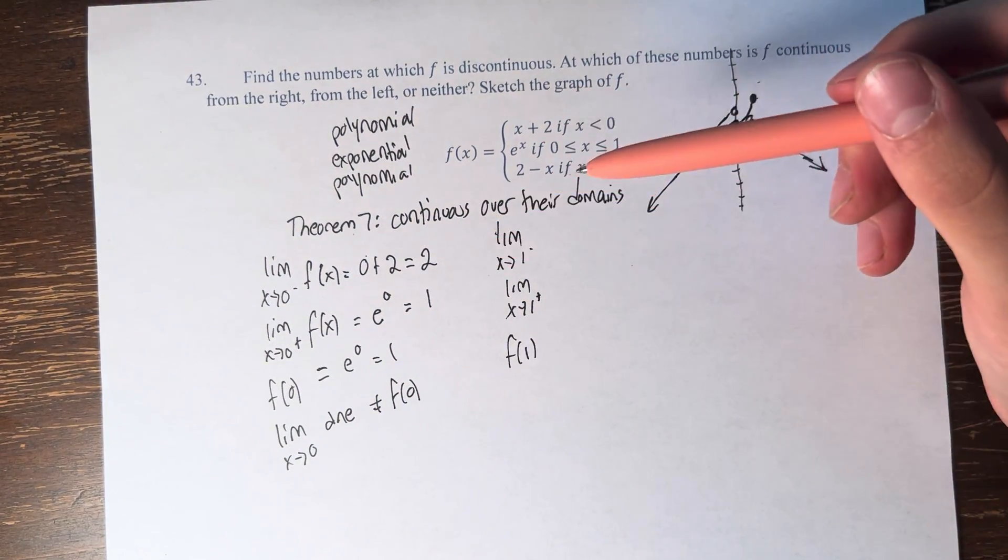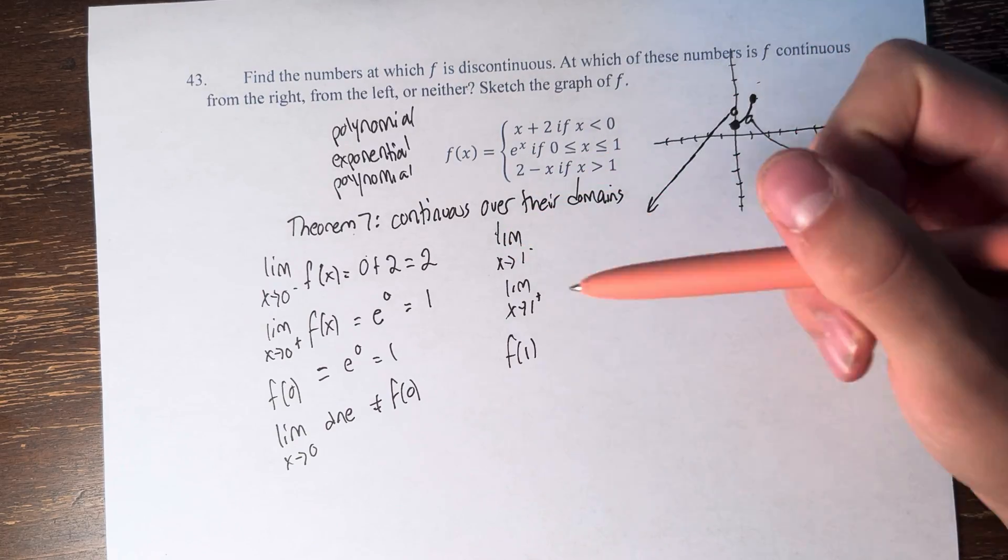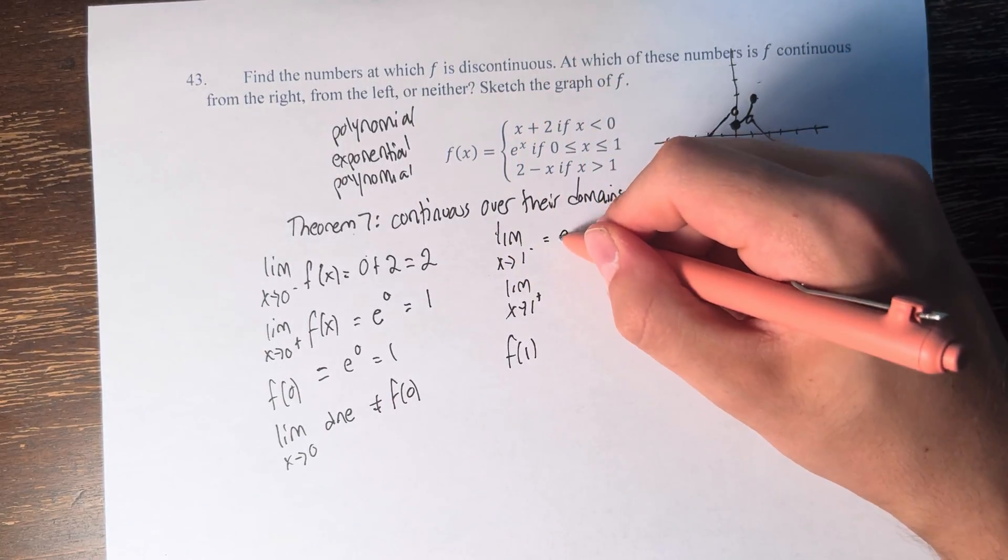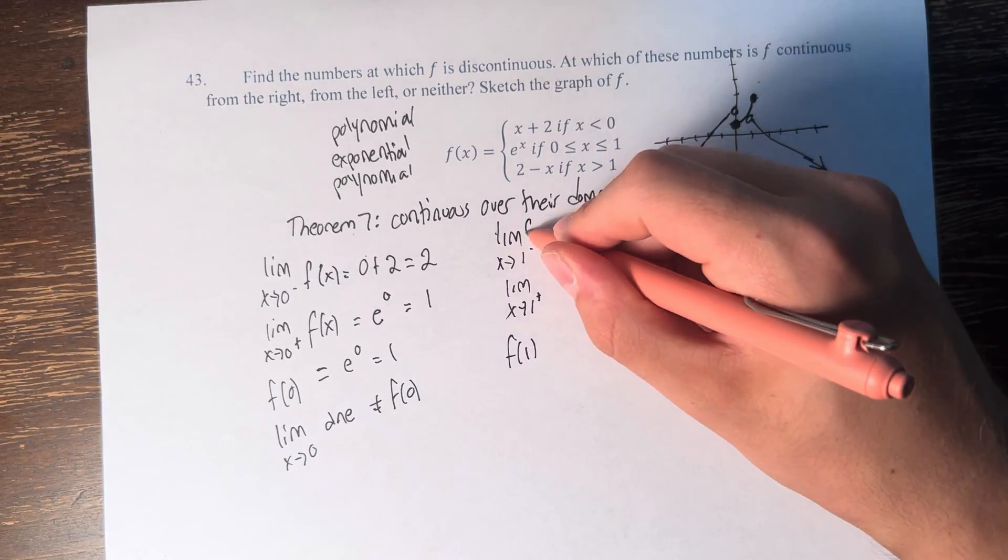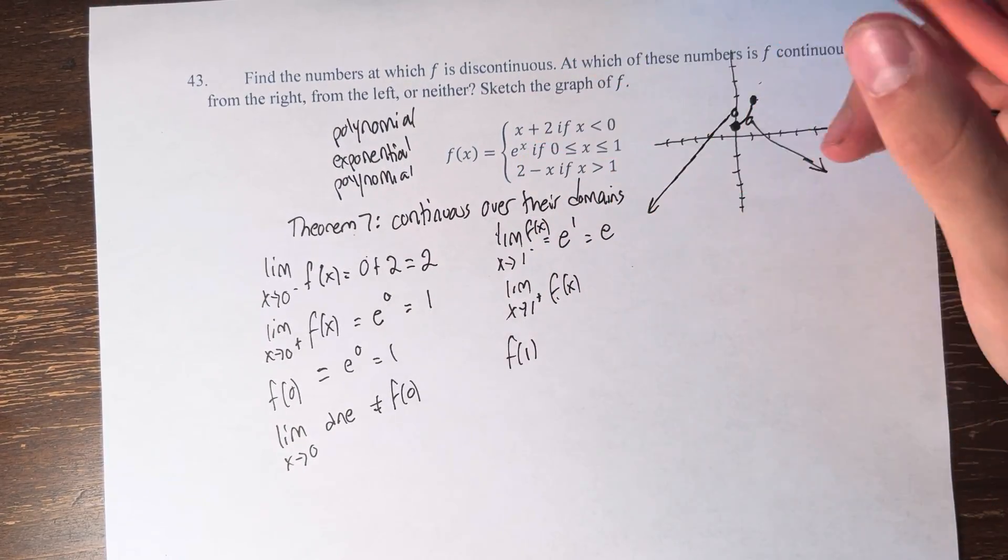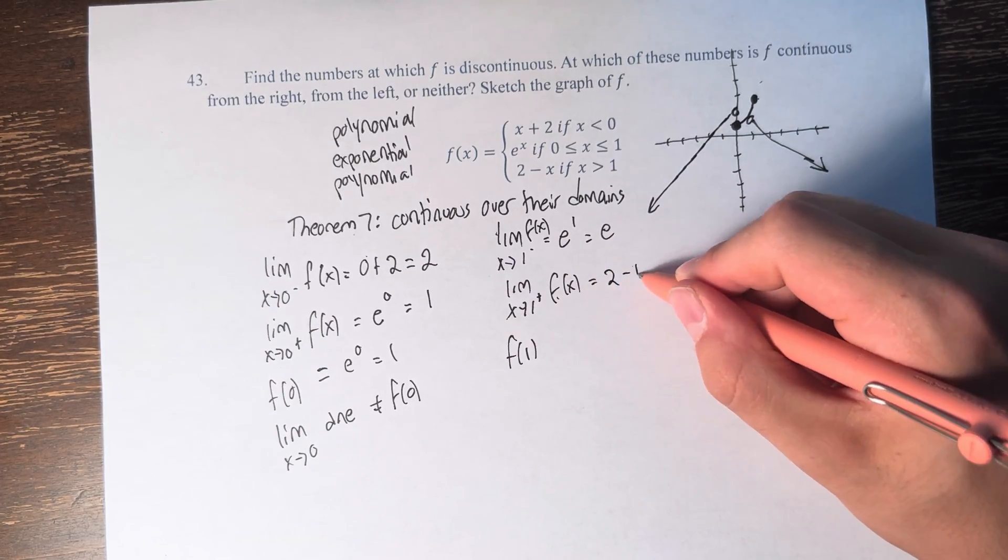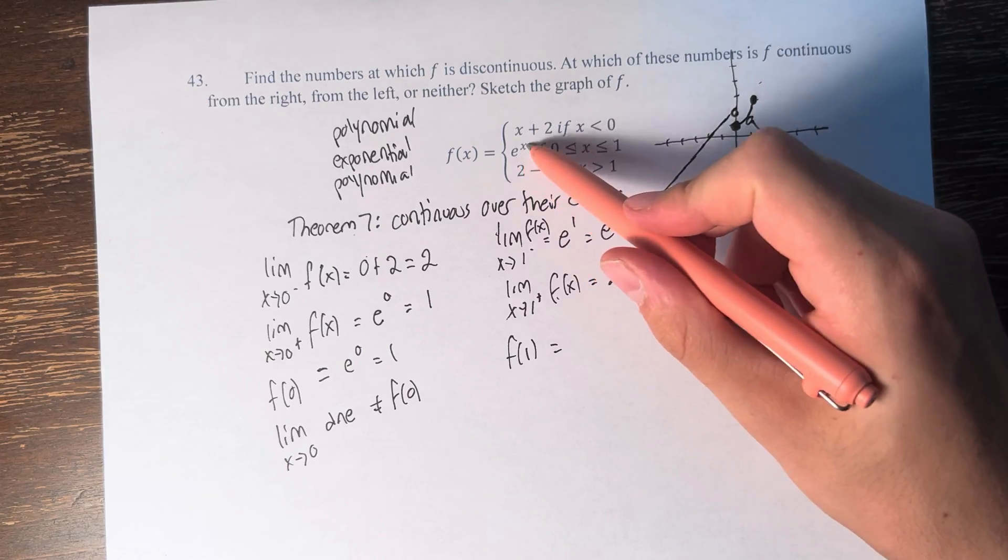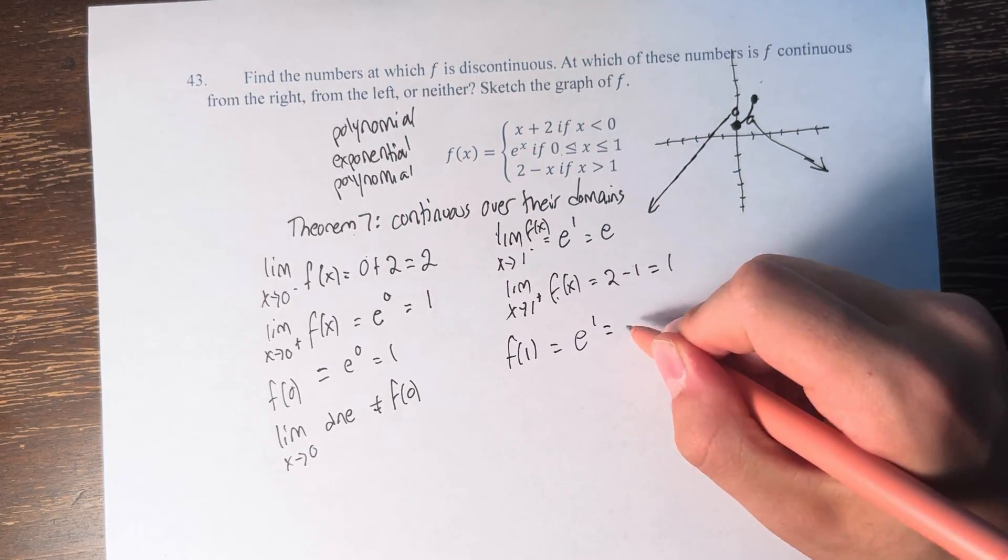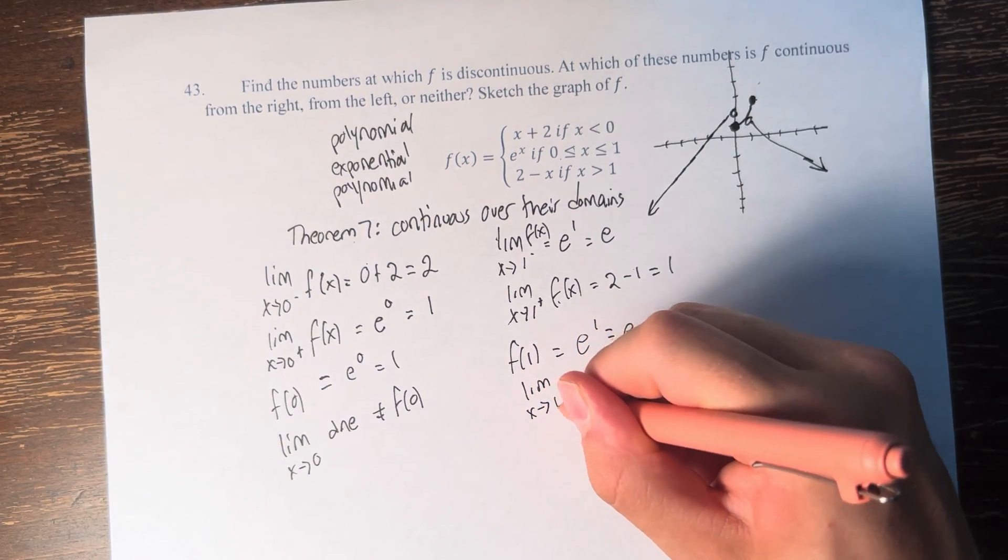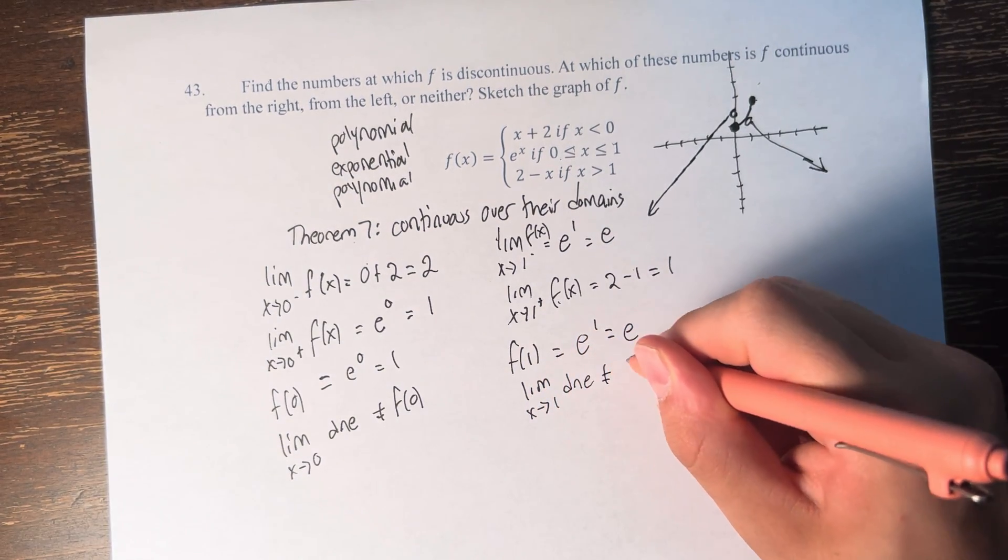So for x approaching 1 from the left, that's approaching 1 from values smaller than 1, so we're going to use e to the x, so that's e to the 1, which is e. Approaching from the right, that's values greater than 1, so we're using 2 minus x, so 2 minus 1 is 1. And f of 1 at x equals 1, it's equal to e to the x, so e to the 1, which is e. And again, the limit as x approaches 1 also does not exist, therefore it can also not equal f of 1.